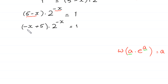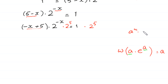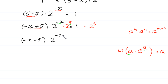Because here we have negative x plus 5, to make the exponent negative x match negative x plus 5, we multiply both sides of this equation by 2 to the power 5. Using the power rule, a to the power m times a to the power n equals a to the power m plus n, we add the powers negative x and 5. This expression becomes: negative x plus 5 times 2 to the power negative x plus 5 is equal to 1 times 2 to the power 5, which is 32.